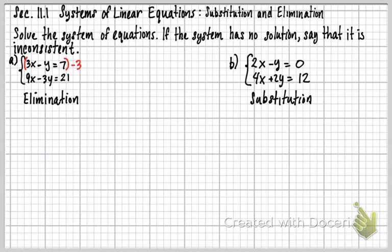So that's going to give me negative 9x plus 3y equals negative 21. And then the bottom one I'm just going to bring down. Just bringing that one down, I didn't do anything to it. So that's going to be 9x minus 3y equals 21.